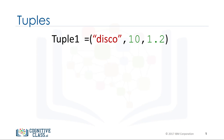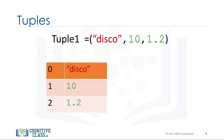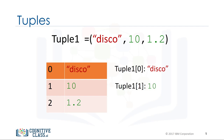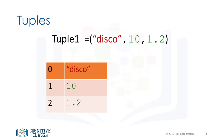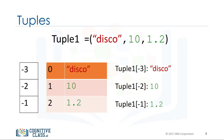Each element of a tuple can be accessed via an index. The following table represents the relationship between the index and the elements in the tuple. The first element can be accessed by the name of the tuple followed by a square bracket with the index number, in this case zero. We can access the second element and also the last element. In Python we can use negative index.